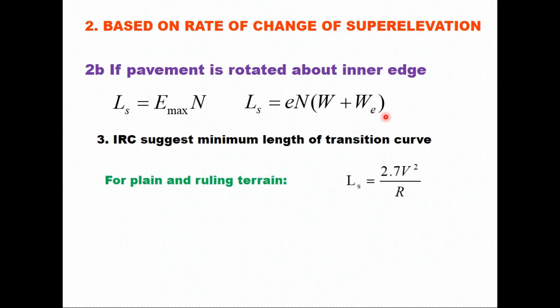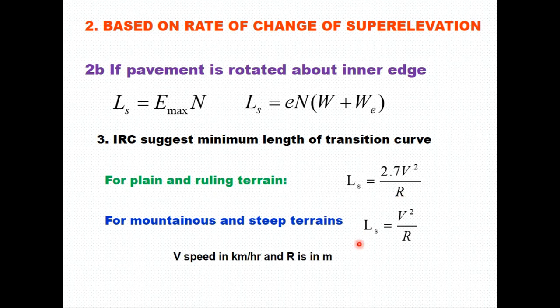IRC suggests that the minimum length of transition curve for plain and rolling terrain should be 2.7 v² / R, and for hilly and mountainous terrain it is v² / R, where v is speed in km/h and R is in meters. The actual length of transition curve is the maximum of three values: one based on rate of change of radial acceleration, one based on rate of change of super elevation, and the IRC minimum length.